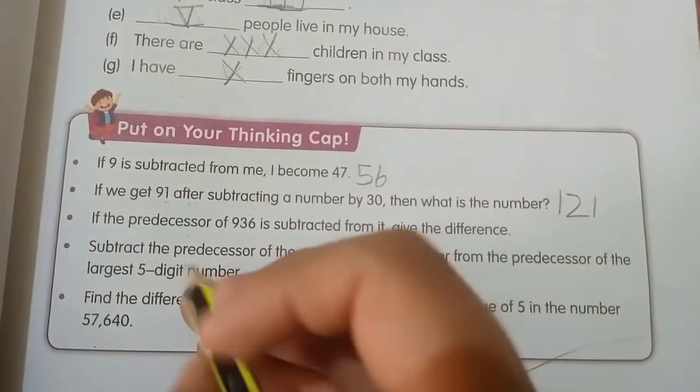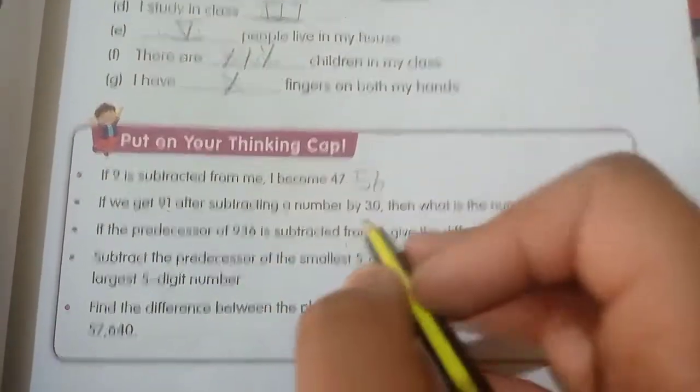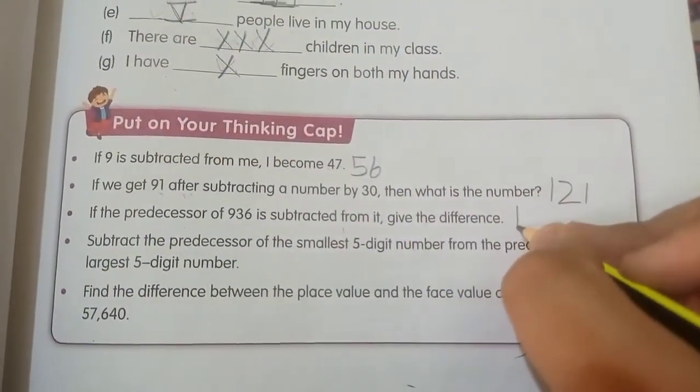If the predecessor of 936 is subtracted from it, give the difference. The answer is 1.